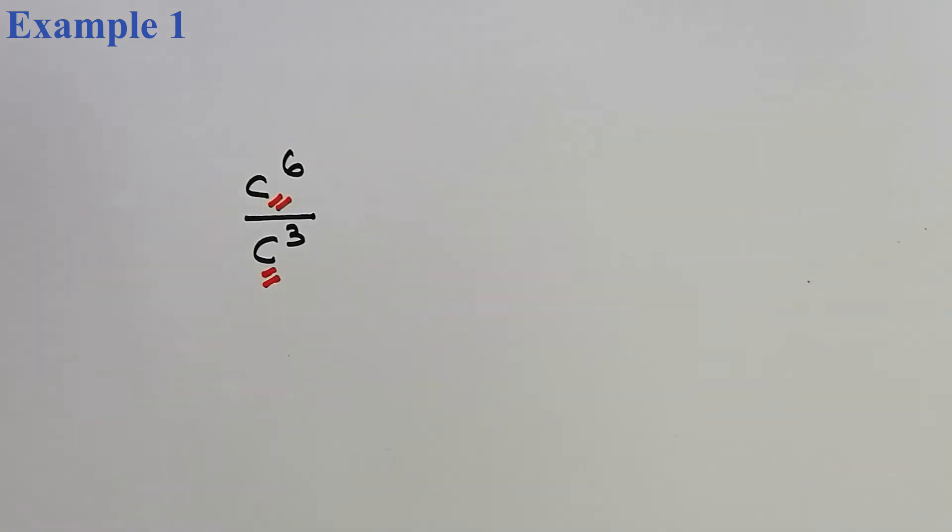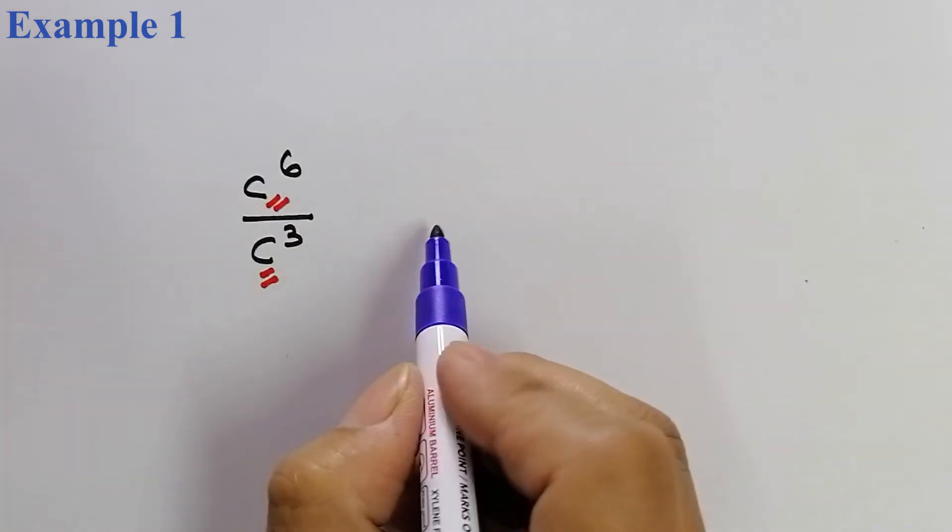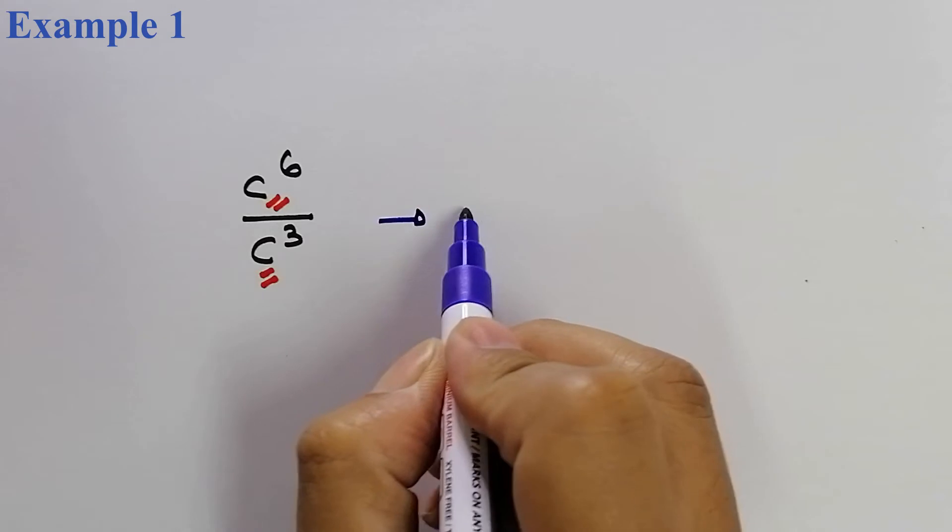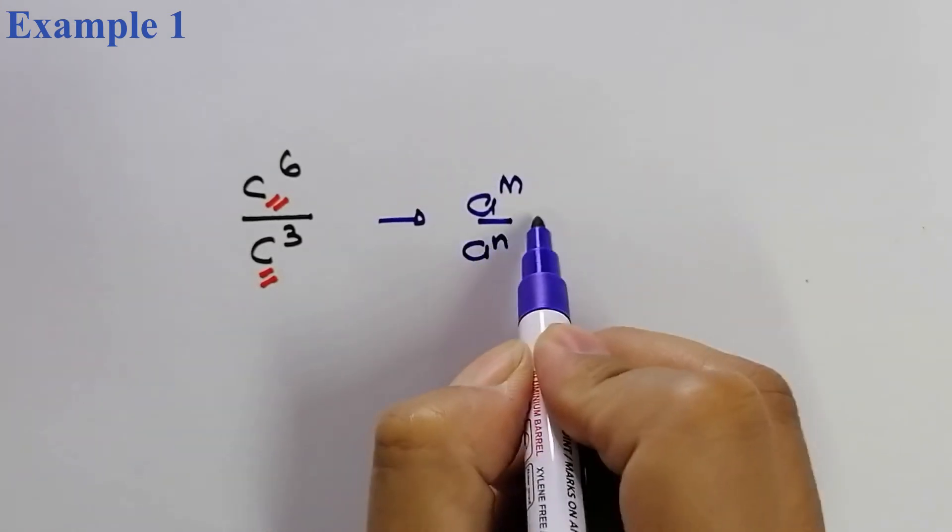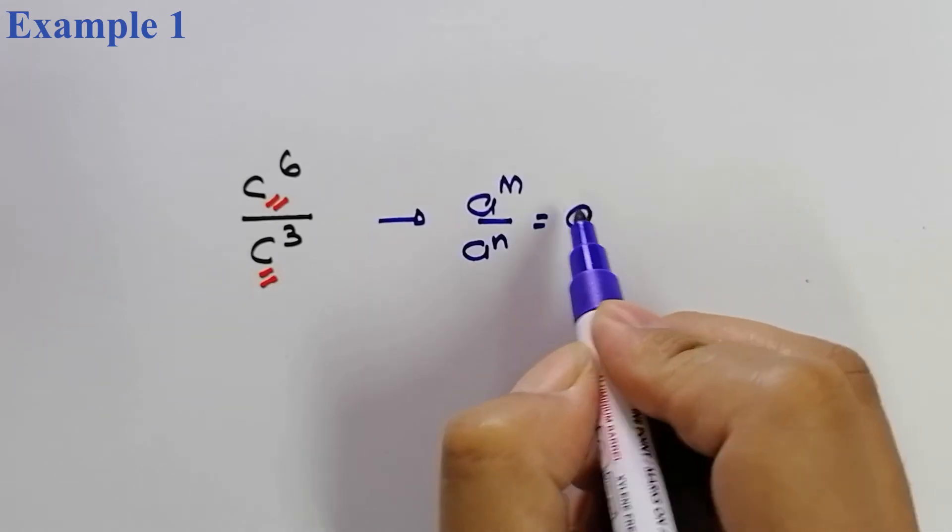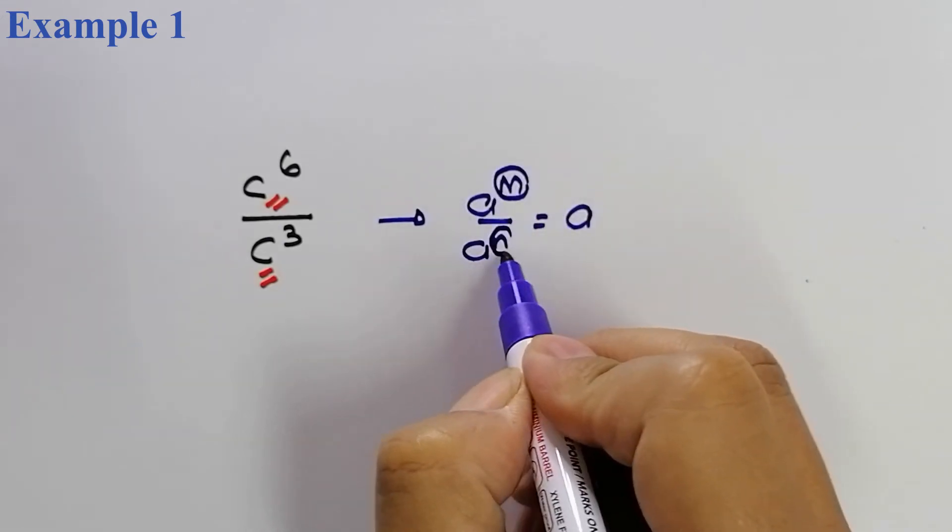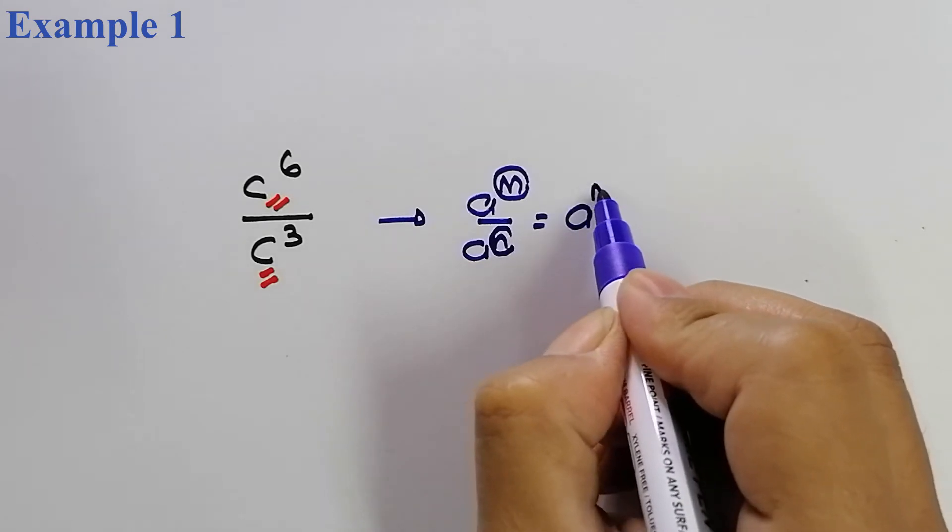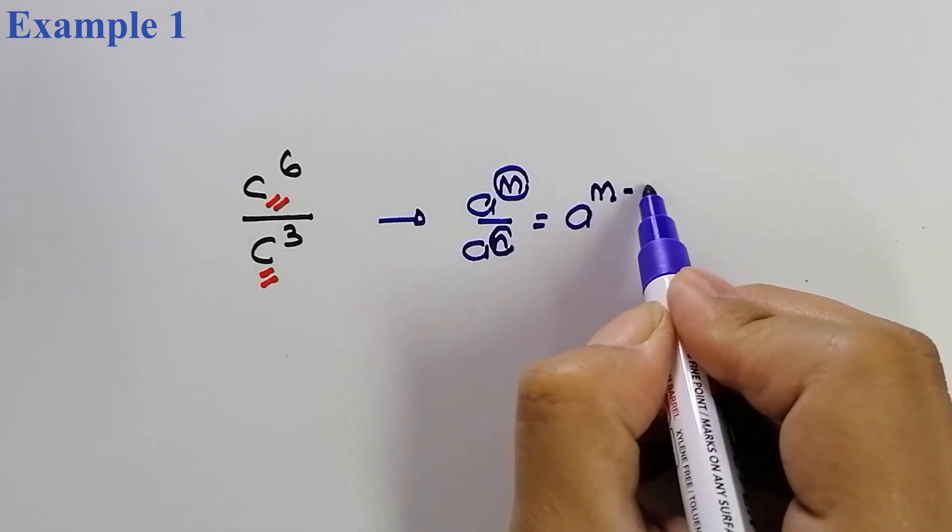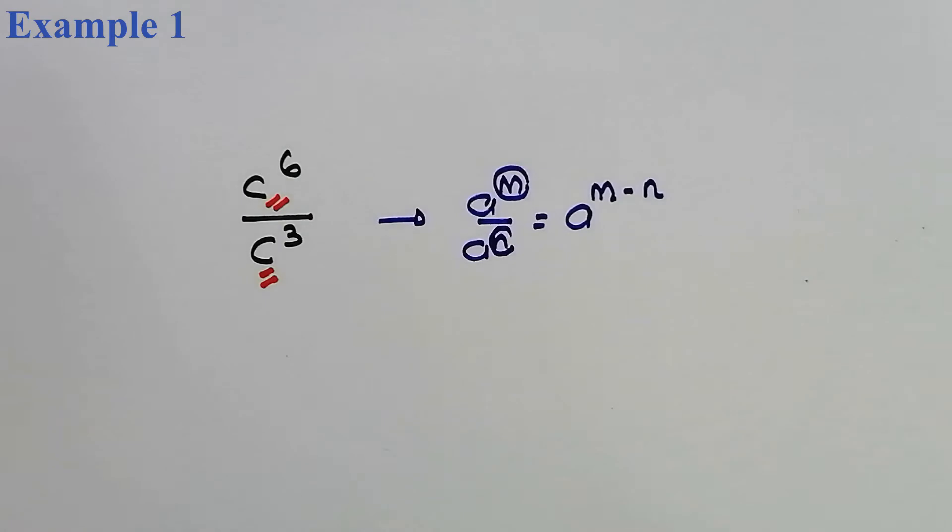So kalau kita tengok pada law, this is supposed to be kalau F of M over F of N. So, eksponen untuk persamaan ini, kalau kita lakukan division nanti, dia sepatutnya kita akan tolakkan. C of X divided by C power of.